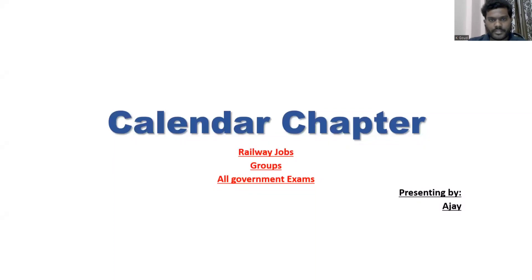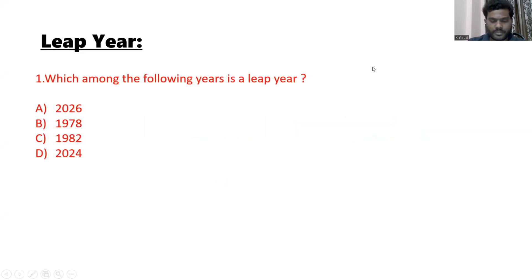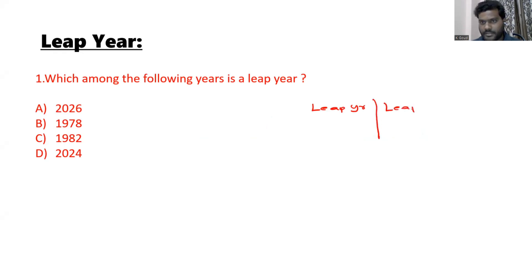We are going to discuss the calendar chapter. This will be very useful for railway jobs, group exams, and all other government exams. In this topic, we will have two categories: one is leap year and another is leap century.